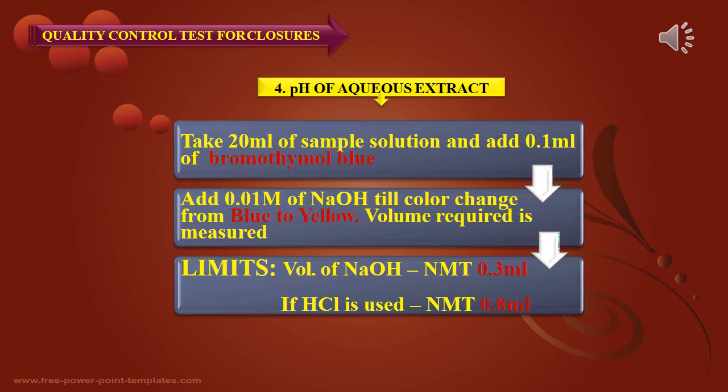For the pH of aqueous extract test, take 20 ml of sample solution and add 0.1 ml of bromothymol blue. Add 0.01 molar sodium hydroxide until the color changes from blue to yellow, and measure the volume required. The volume of sodium hydroxide should not be more than 0.3 ml. If hydrochloric acid is used, it should not be more than 0.8 ml.